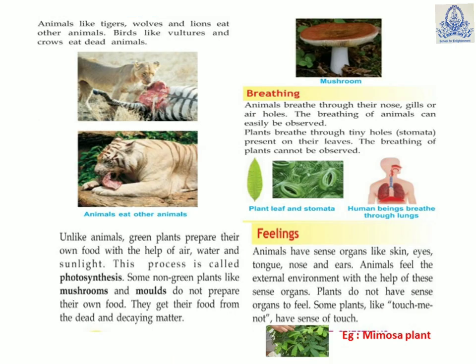Animals like tigers, wolves, and lions eat other animals. Birds like vultures and crows eat dead animals. Unlike animals, green plants prepare their own food with the help of air, water, and sunlight — this process is called photosynthesis. Some non-green plants like mushrooms and moles do not prepare their own food; they get their food from dead and decaying matter.